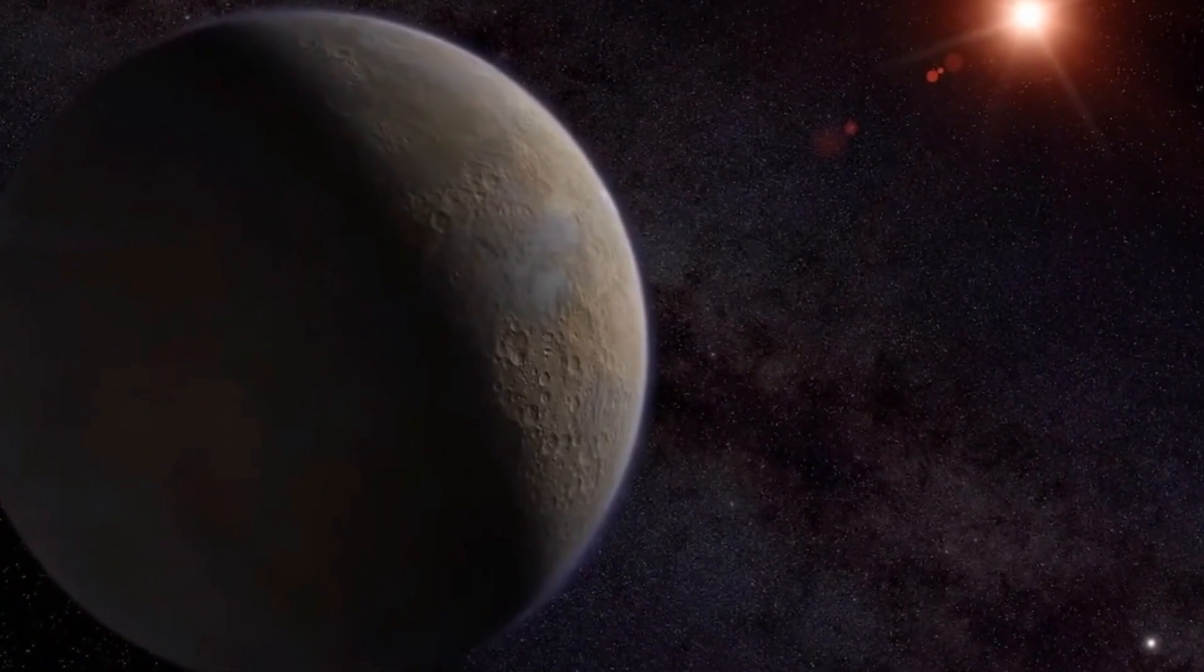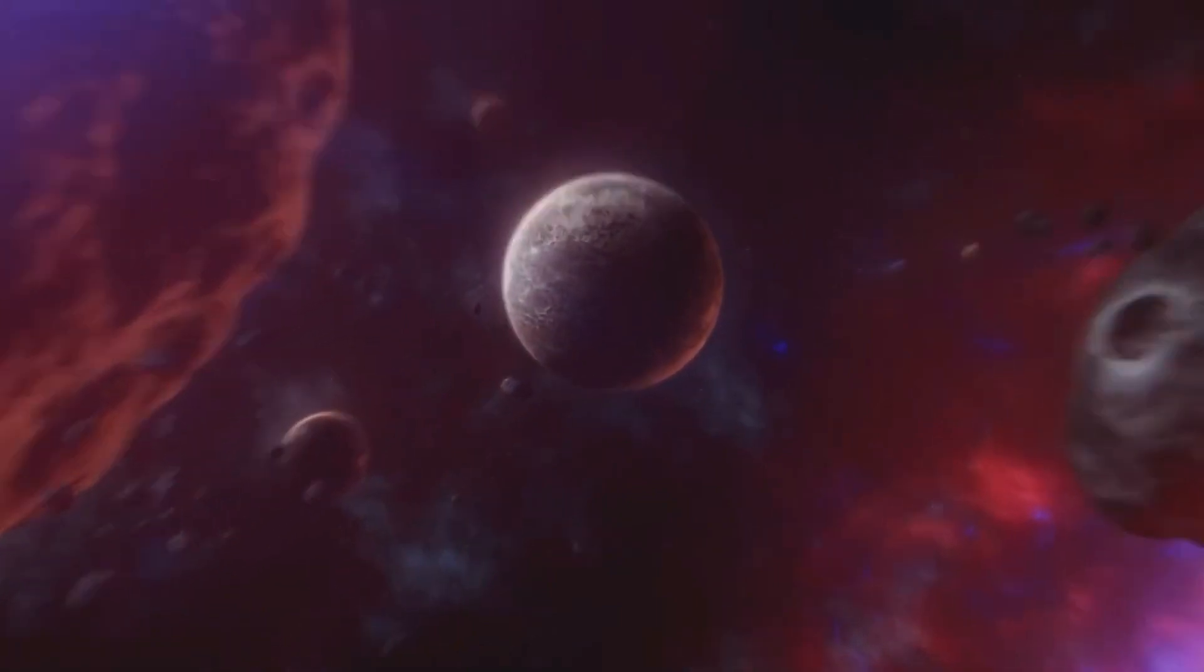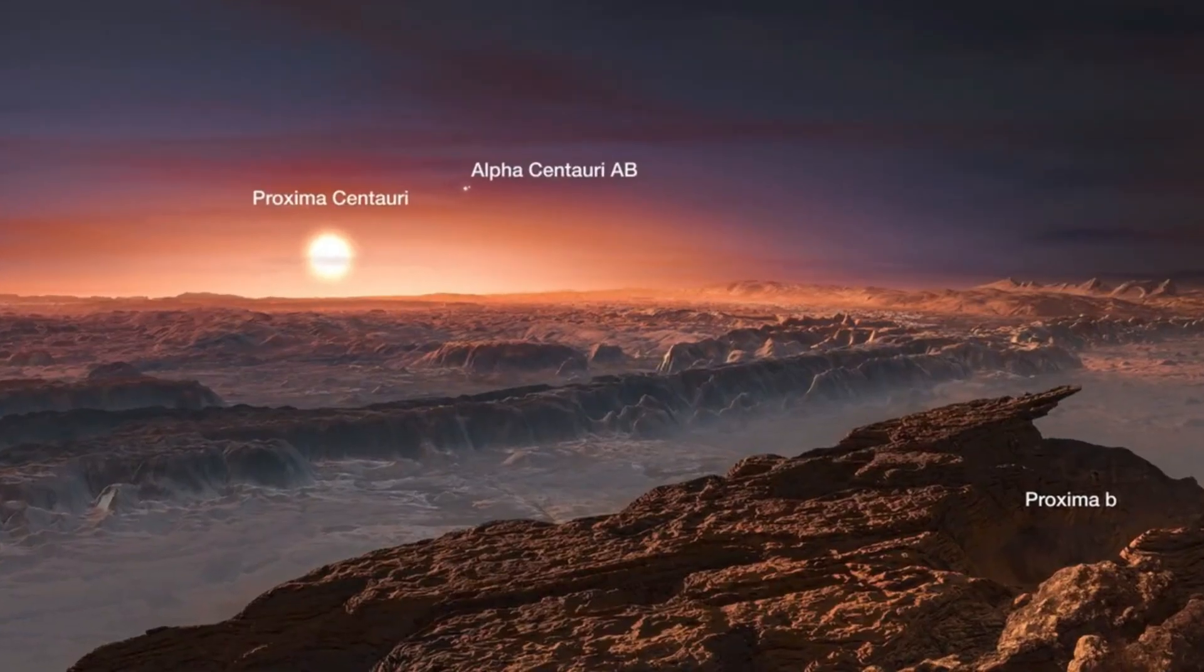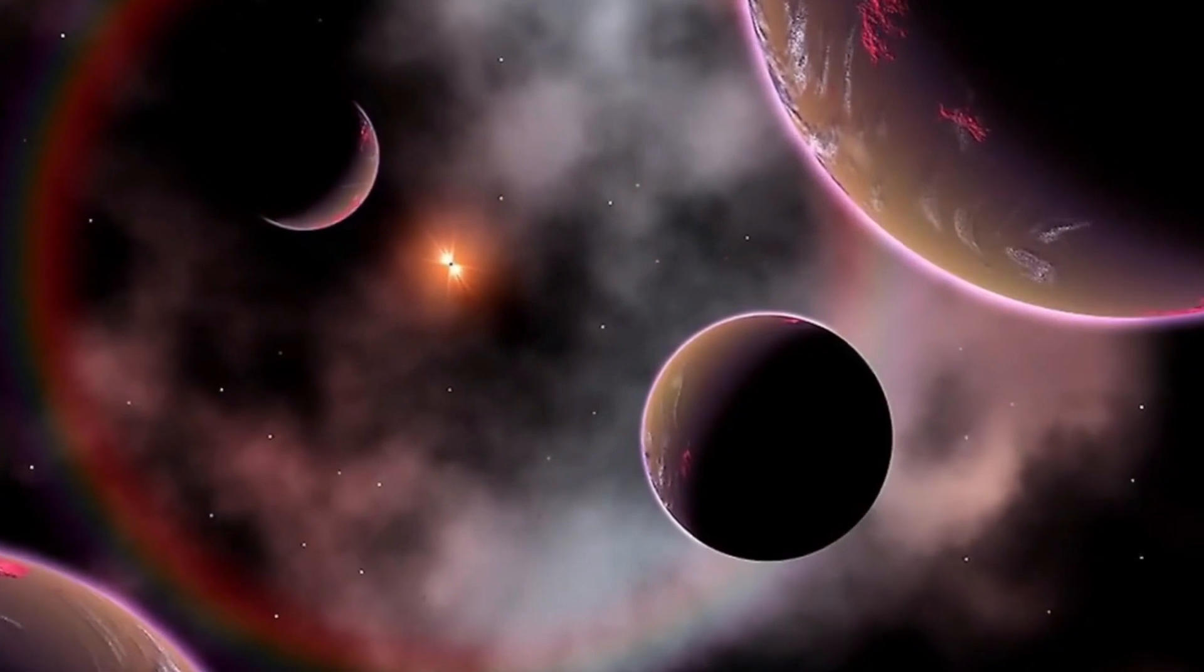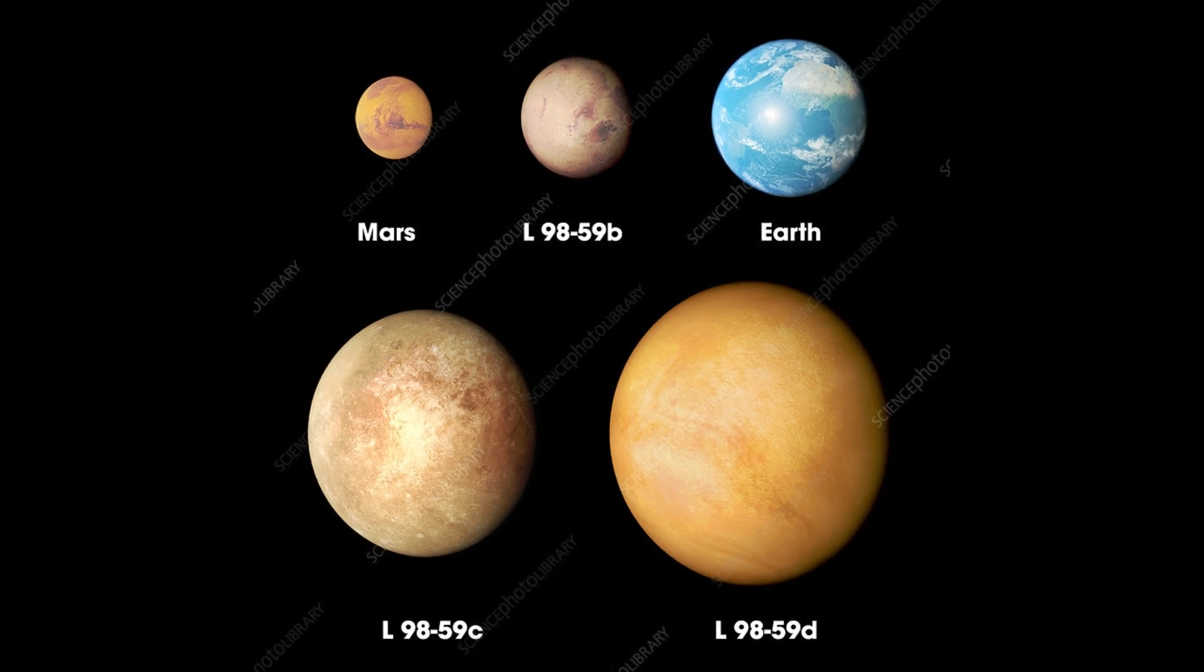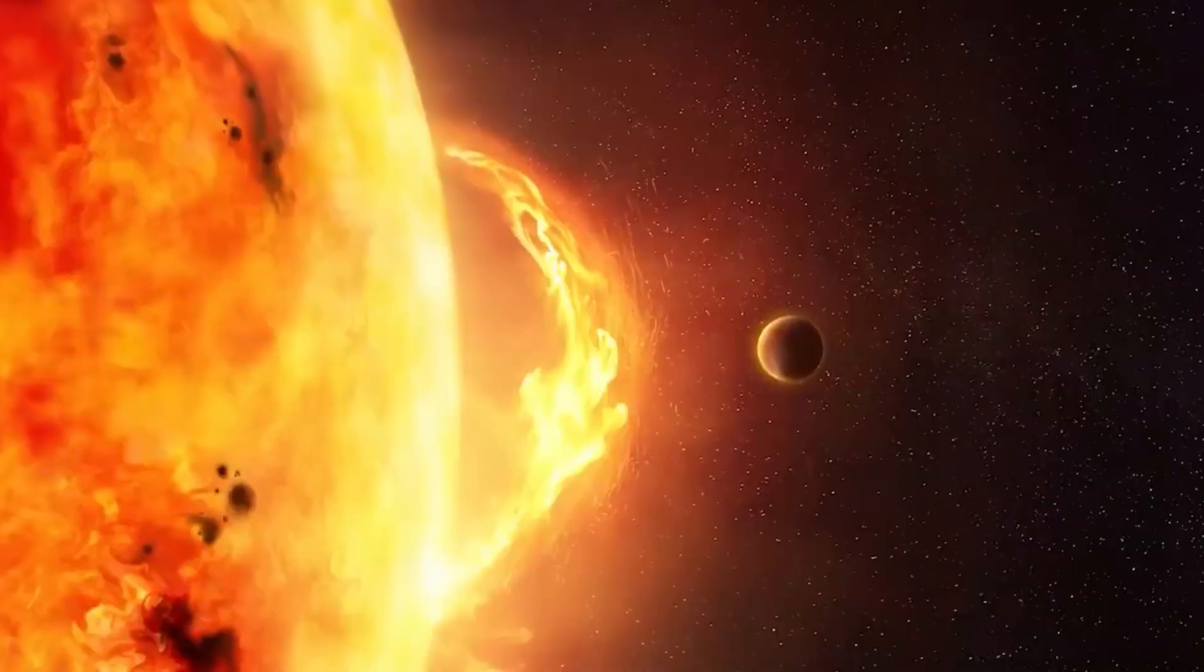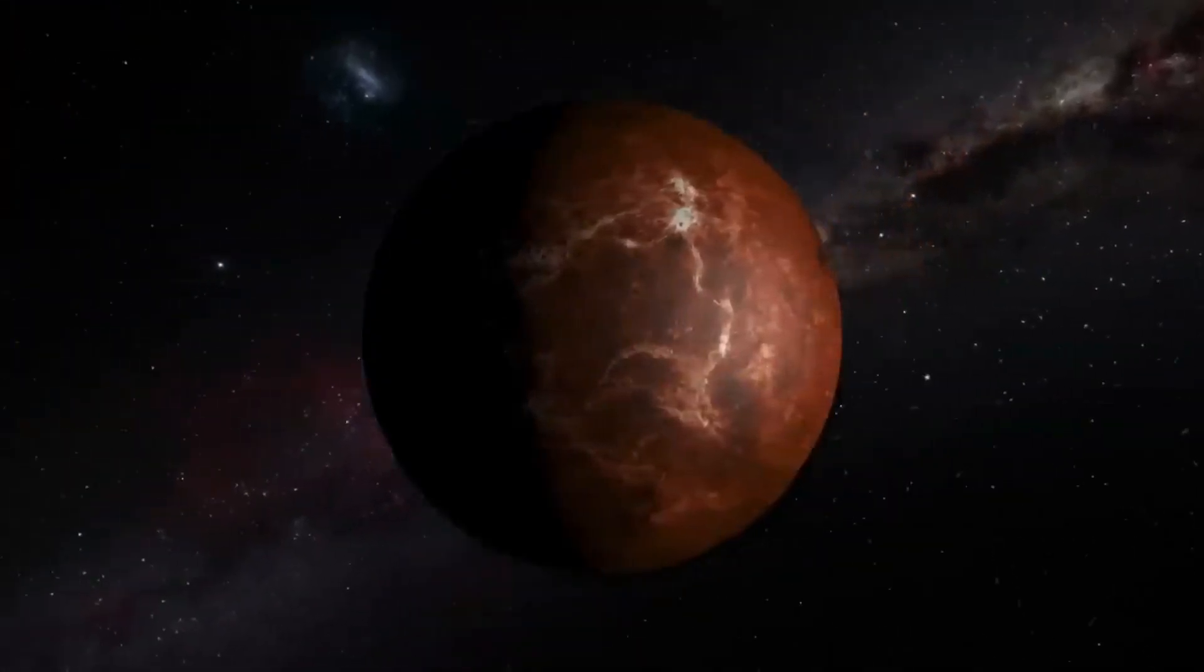So, we can say that Proxima d is an exciting discovery because it is one of the smallest and lightest exoplanets found so far. It is also the lightest exoplanet ever measured using the radial velocity method. That distinction previously went to a planet about one-half the mass of Venus, orbiting the nearby star L98-59. The radial velocity method detects tiny wobbles in the motion of a star caused by an orbiting planet's gravitational pull.